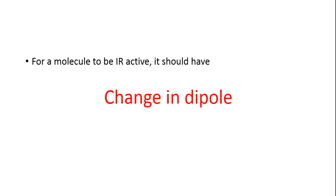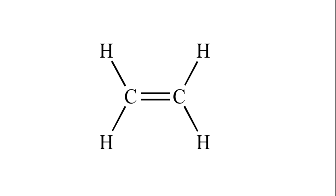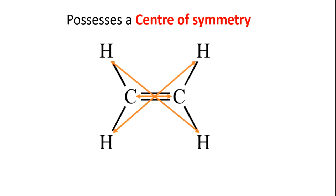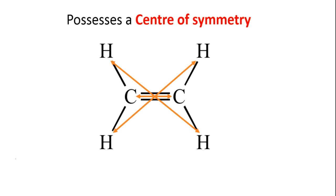For a molecule to be IR active, it should have a change in dipole moment. For ethylene, we check whether it is a centrosymmetric molecule. We can see there is a center of inversion, so ethylene is a centrosymmetric molecule.